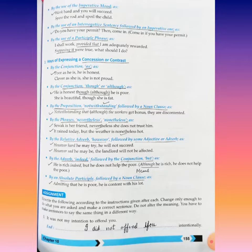Let's see the example: Do you have your permit? Then come in. What's the meaning? Come in if you have your permit. By the use of a participle phrase: I shall work, provided that I am adequately rewarded.